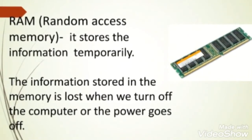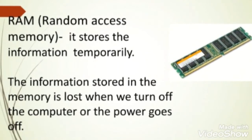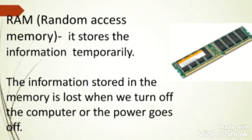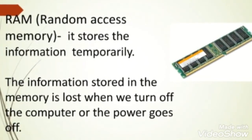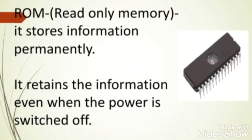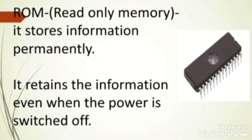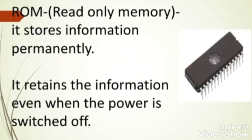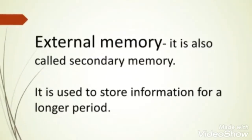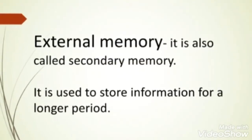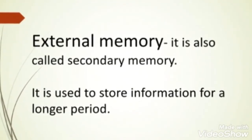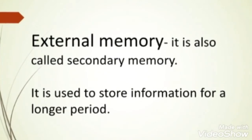RAM stands for Random Access Memory. It stores information temporarily — the information stored in memory is lost when we turn off the computer or the power goes off. ROM stands for Read Only Memory. ROM stores information permanently and retains that information even when the power is switched off. External memory is also called secondary memory, and it is used to store information for a longer period.